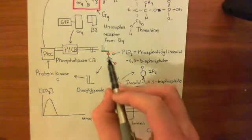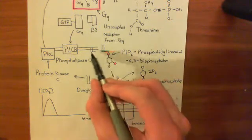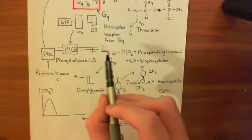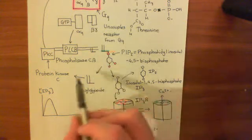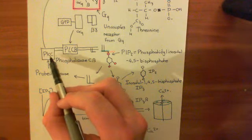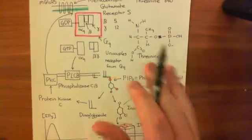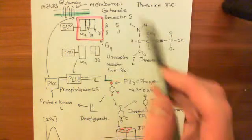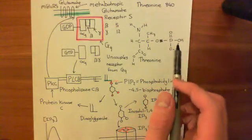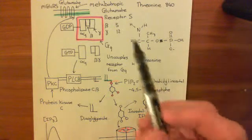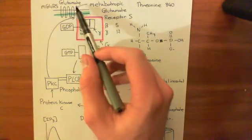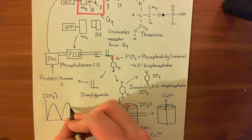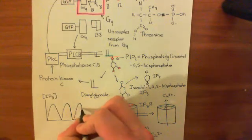The diacylglycerol level also goes down because phospholipase C-beta has become inactive — it's being returned to phospholipids and you've stopped making more. So the activation of protein kinase C goes down, and protein kinase C stops adding phosphate groups onto mGluR5. A phosphatase cleaves the phosphate group off, the receptor becomes active again — presuming glutamate is still there — the process starts over, IP3 goes up again, and you get oscillations in IP3 level.